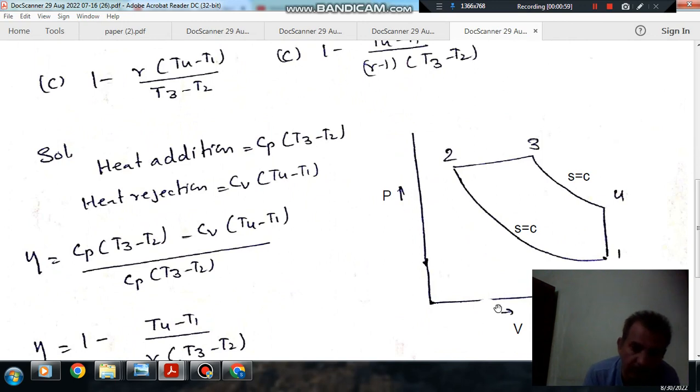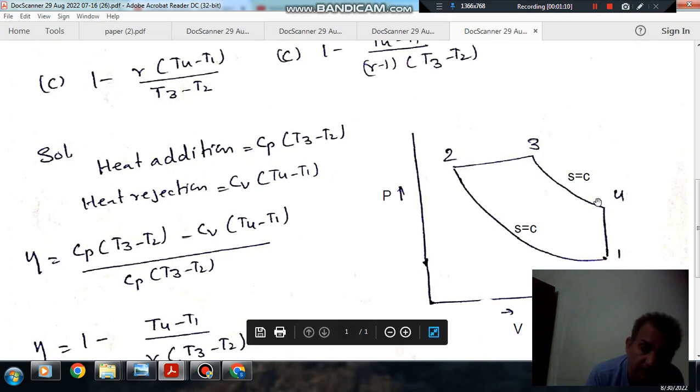So, this is your PV diagram. 1-2 is isentropic compression, 2-3 constant pressure heat addition, 3-4 is isentropic expansion, and 4-1 is constant volume heat rejection.